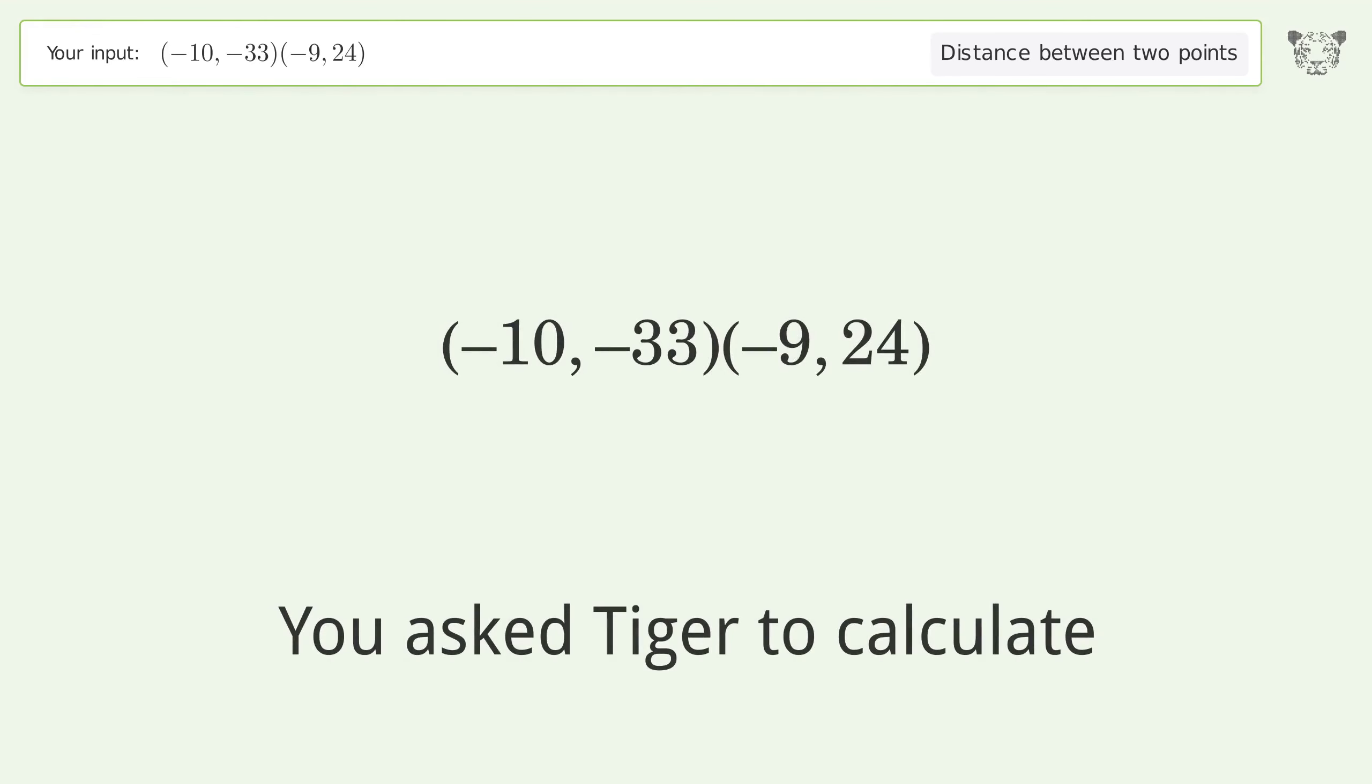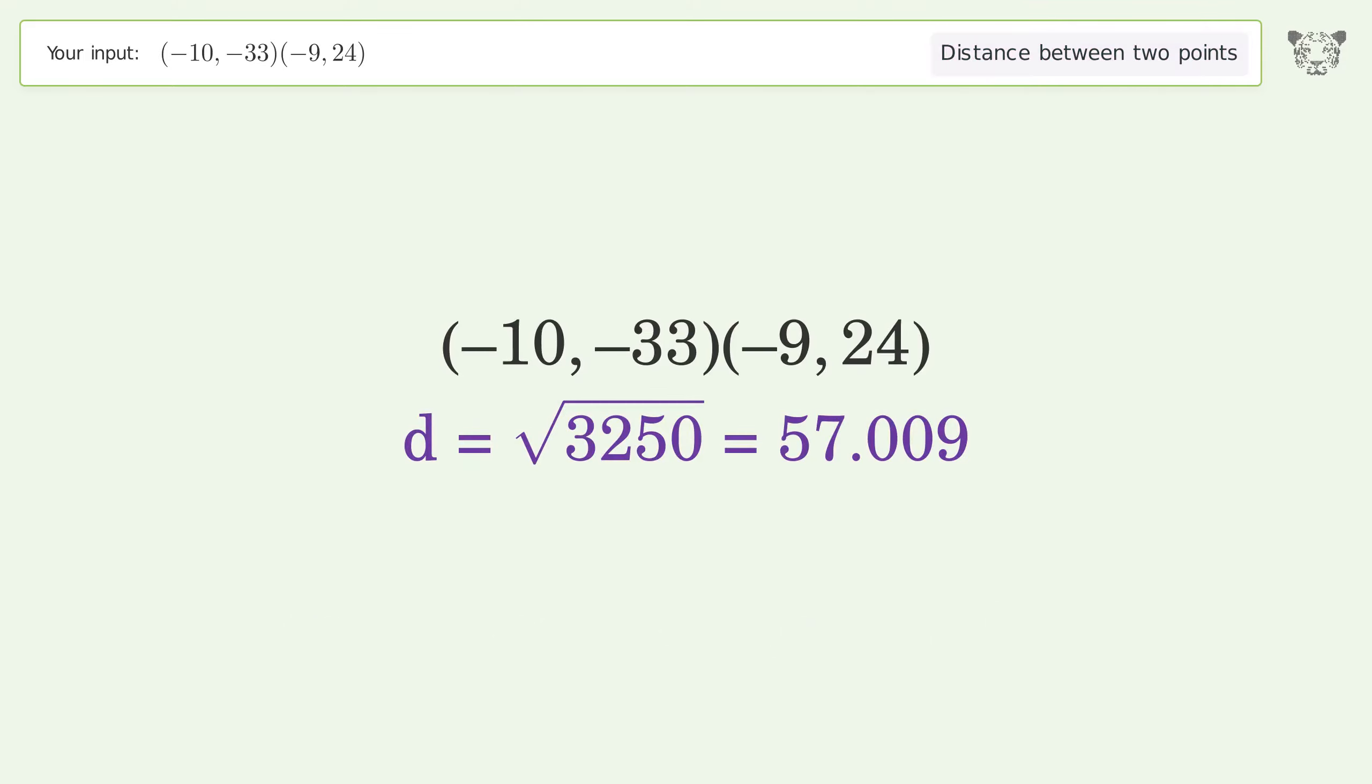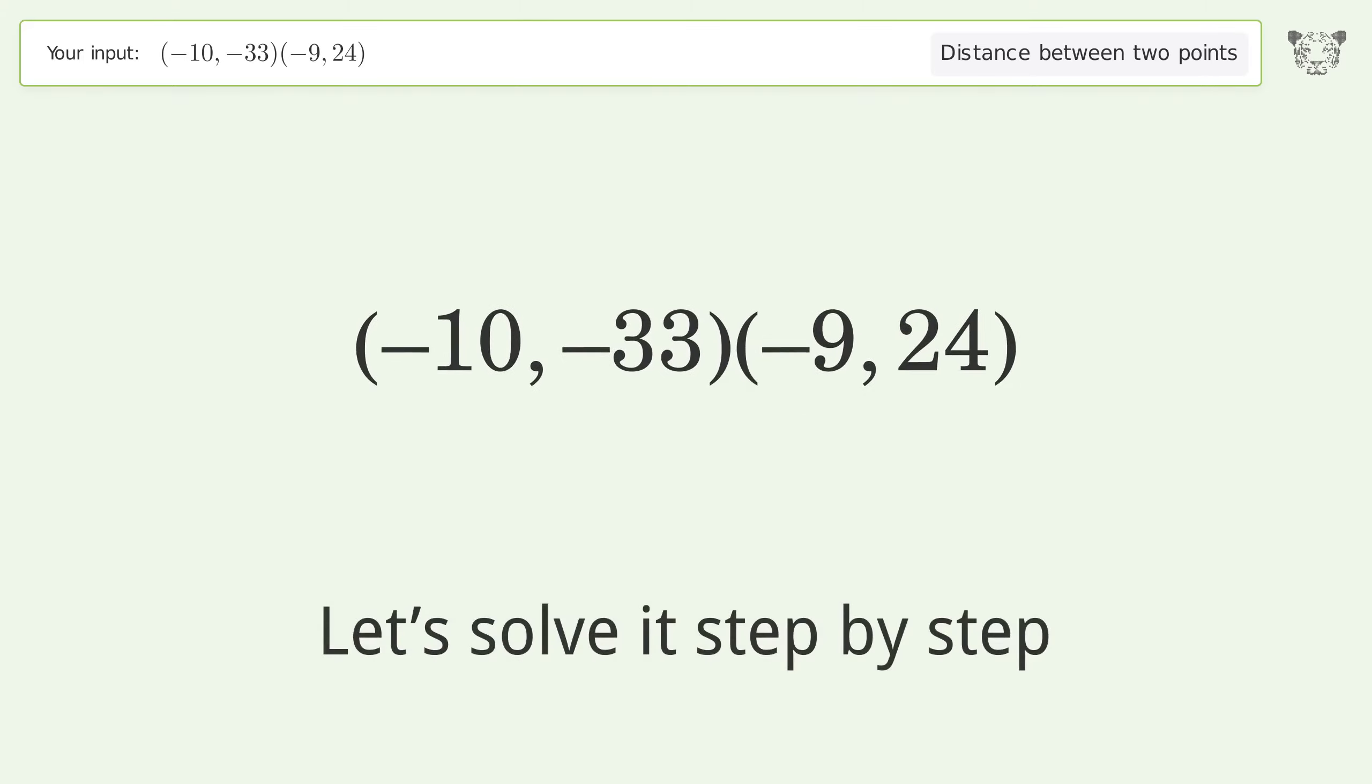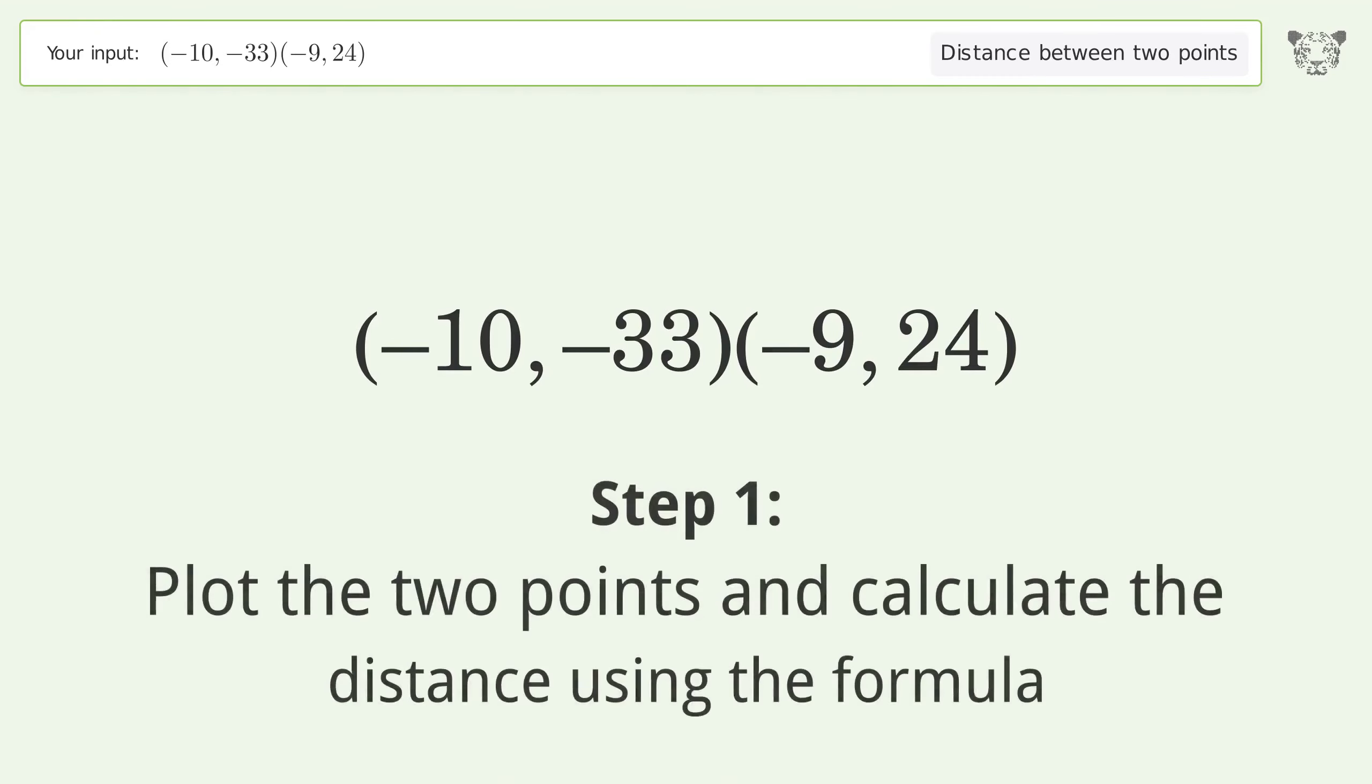You asked to calculate the distance between two points. The distance between the two points is the square root of 3250 or 57.009. Let's solve it step by step. Plot the two points and calculate the distance using the formula.